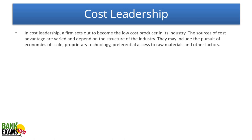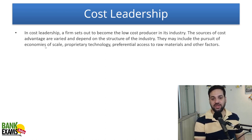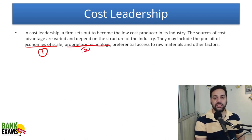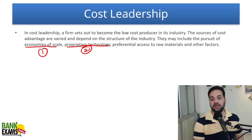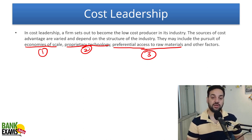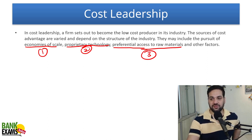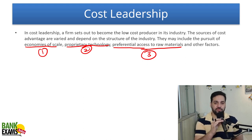In cost leadership, a firm sets out to become the lowest cost producer. How do you become the cost leader? The reasons include economies of scale — you are producing goods in very high quantities. Or you have some unique technology enabling you to produce goods at very low prices. You may also have preferential access to raw materials at a very low price. These are the reasons you can become the cost leader, selling products at the lowest cost — that is your strength.